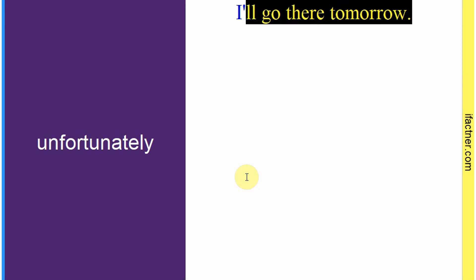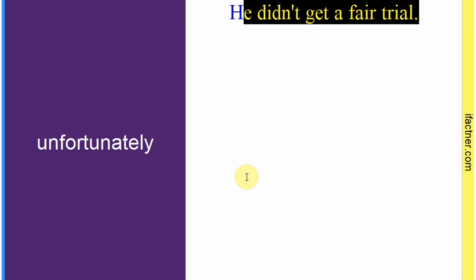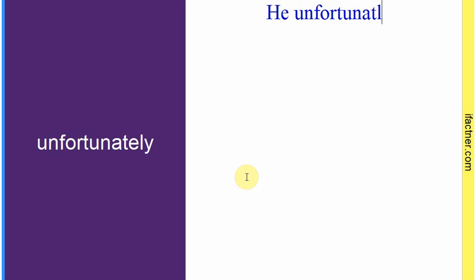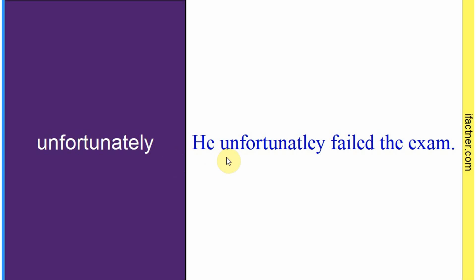Word hai: 'unfortunately'. Sentence banaate hain meaning samajhne ke liye: 'He, unfortunately, failed the exam.' Badkismati se us ne exam fail kar diya. Toh 'unfortunately' hota hai 'badkismati se'. 'Fortunate' — kismat; 'fortunately' — khushkismati se; 'unfortunately' — badkismati se. Sentence banaaya: 'He, unfortunately, failed the exam.'